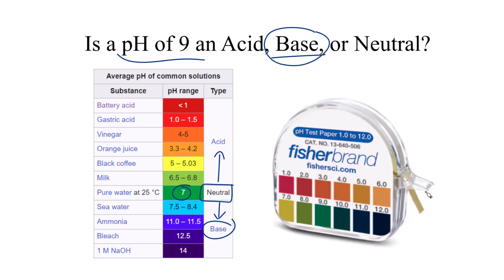You could take a piece of pH paper and put it in a pH 9 solution, and you should see this green, this dark green here. You could also use an electronic pH meter and even get a more accurate reading.